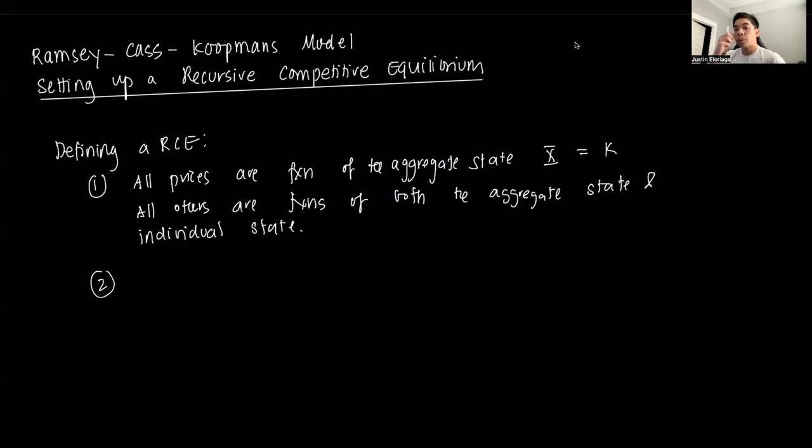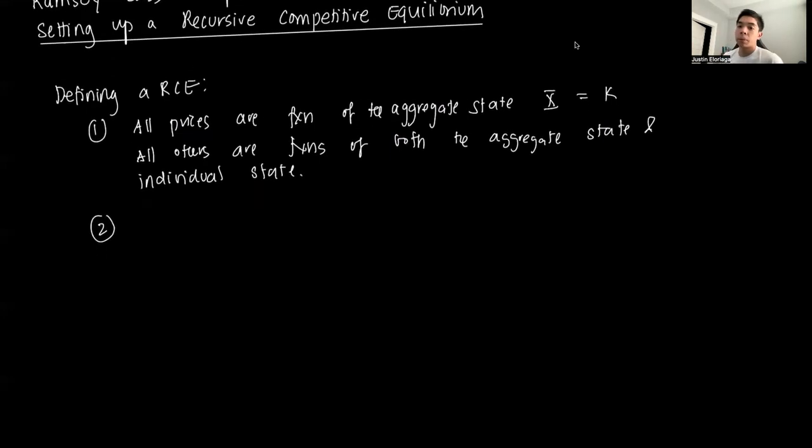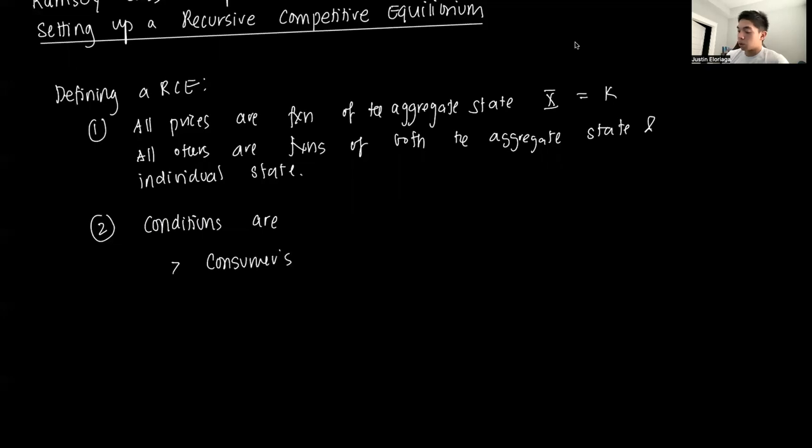Step two: we have in the recursive competitive equilibrium standard conditions. The first one is that the consumer's problem. The way we do that in an RCE is basically use a value function and you generate a set of decision rules, given prices.